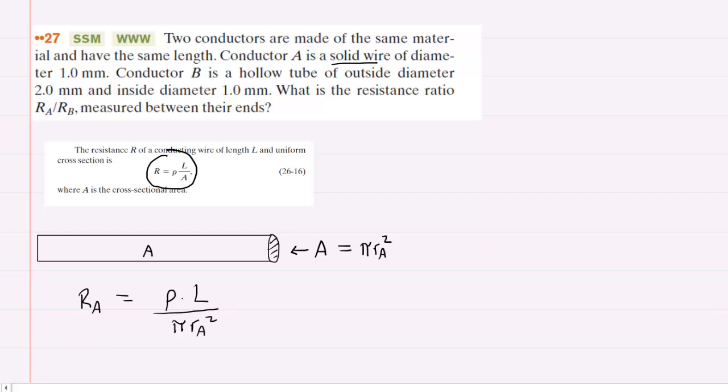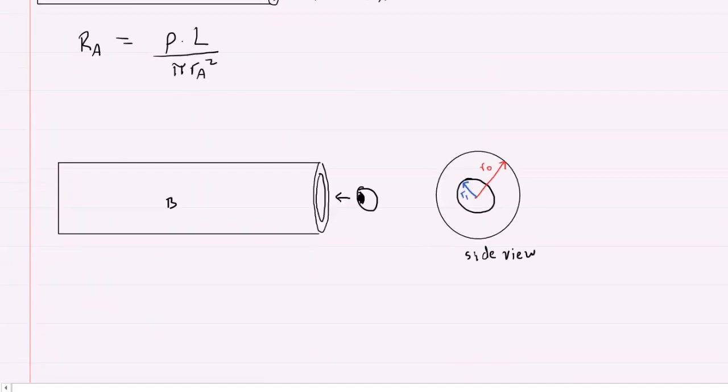Now, conductor B is a little bit trickier. It is a hollow tube, and because it's a hollow tube, there is both an outside diameter and an inside diameter. So we've drawn a picture down here, and this time it is a hollow tube. We've tried to draw that, and to make things clearer, we have drawn a side view to represent the cross-sectional area.